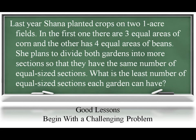For example, last year, Shana planted crops on two one-acre fields. In the first one there are three equal areas of corn and the other has four equal areas of beans. She plans to divide both gardens into more sections so that they have the same number of equal-sized sections. What is the least number of equal-sized sections each garden can have?